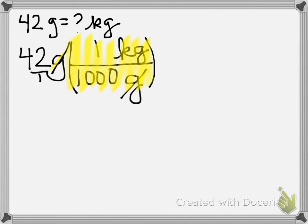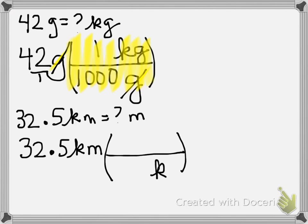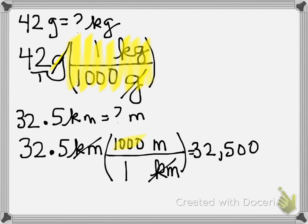Number two: how many meters are in 32.5 kilometers? We start with our 32.5 kilometers — always start with the given. Kilometers is in the numerator, so it has to go in the denominator. Meters go in the numerator. Kilometers cancel out. Kilometer is the larger unit and it's 1,000 because we move three places. Because 1,000 is in the numerator, we multiply by it, making our answer 32,500 meters.